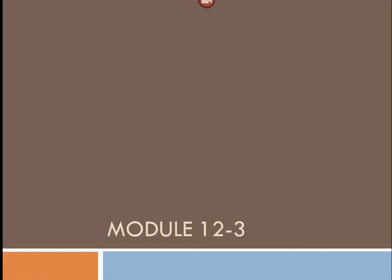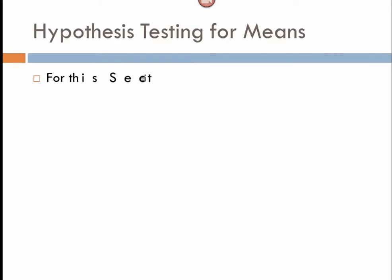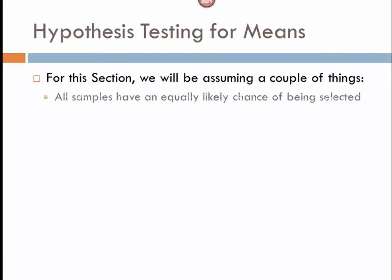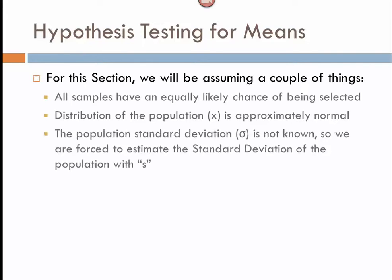We are now ready to go into the last section of Module 12, where we look at doing hypothesis tests when our standard deviation of the population is unknown. In this section, we're going to be assuming some slightly different things from the previous. Most of these are the same. We're going to have a good random sample, assume that the population is approximately normal, and that the population sigma is not known. So we are forced to estimate the standard deviation of the population with our S value, which is the standard deviation of our sample.